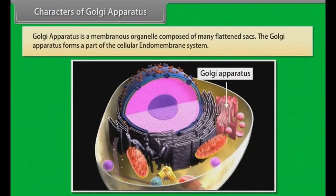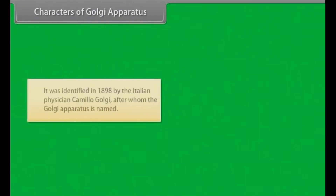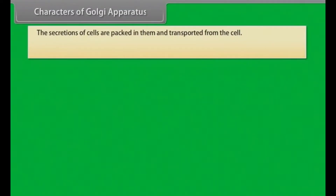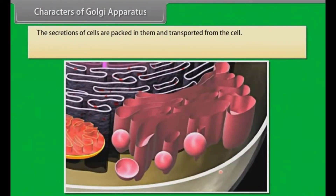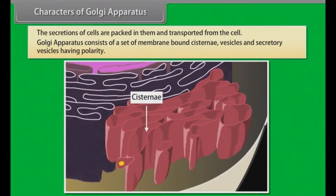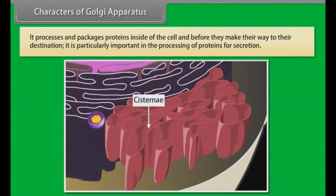Characters of Golgi apparatus. Golgi apparatus is a membranous organelle composed of many flattened sacs. It forms a part of the cellular endomembrane system. It was identified in 1898 by the Italian physician Camillo Golgi after whom the Golgi apparatus is named. The secretions of cells are packed in them and transported from the cell. Golgi apparatus consists of a set of membrane-bound cisternae, vesicles and secretory vesicles having polarity. It processes and packages proteins inside the cell before they make their way to their destination, and is particularly important in the processing of proteins for secretion.